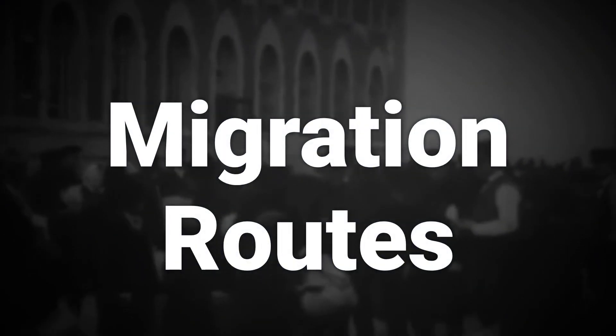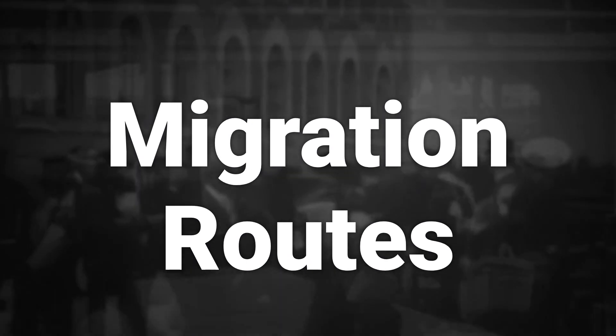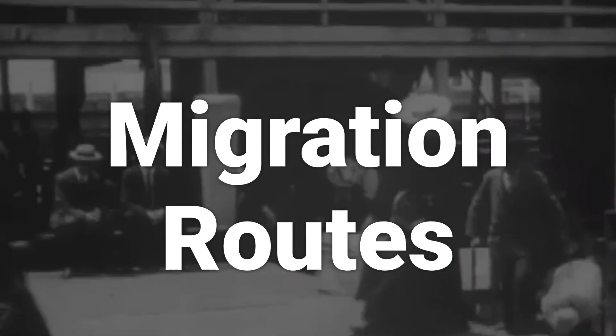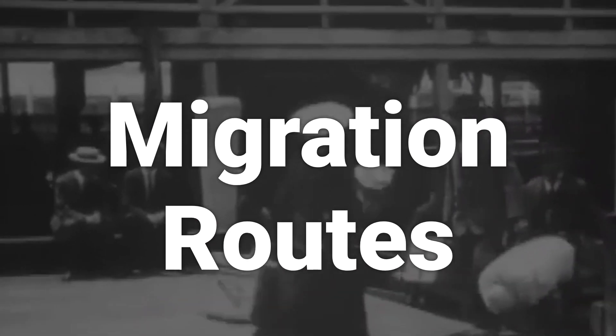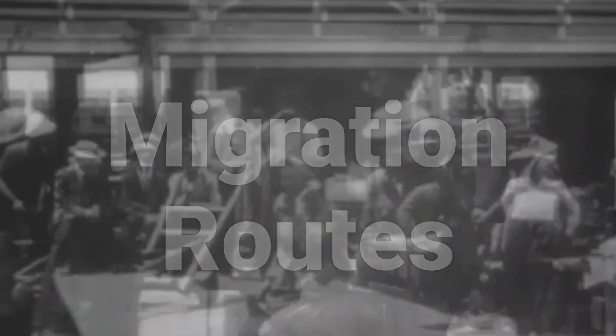Scottish immigrants, including the Barbary family, migrated to North America during the American War of Independence. Approximately 5,000 Loyalists, including Captain John Barbary, settled in Canada around 1783.